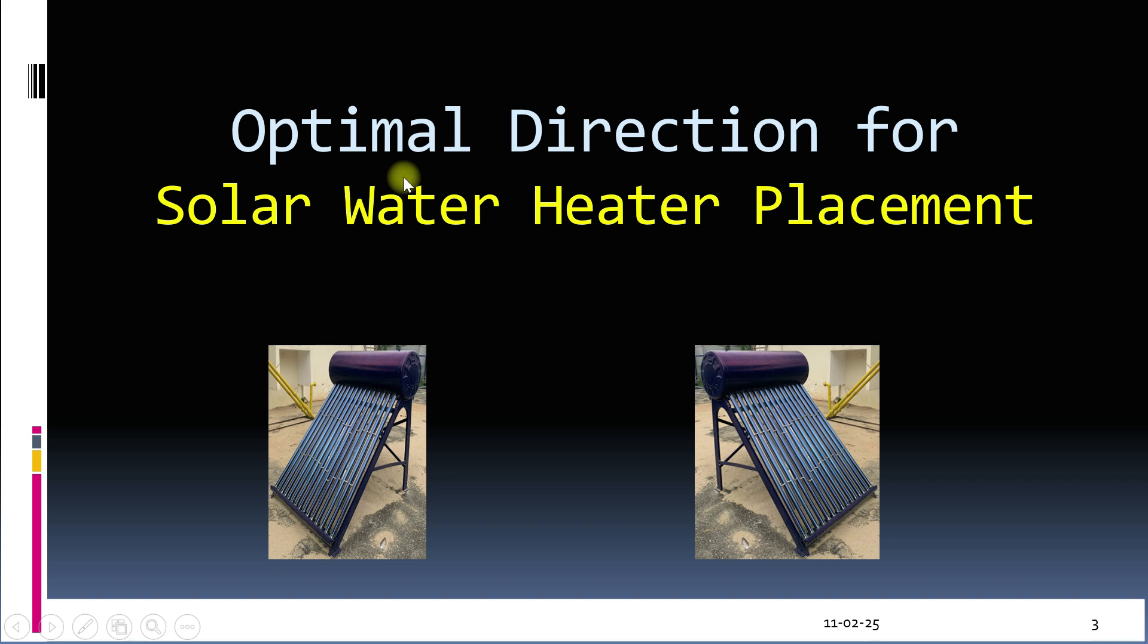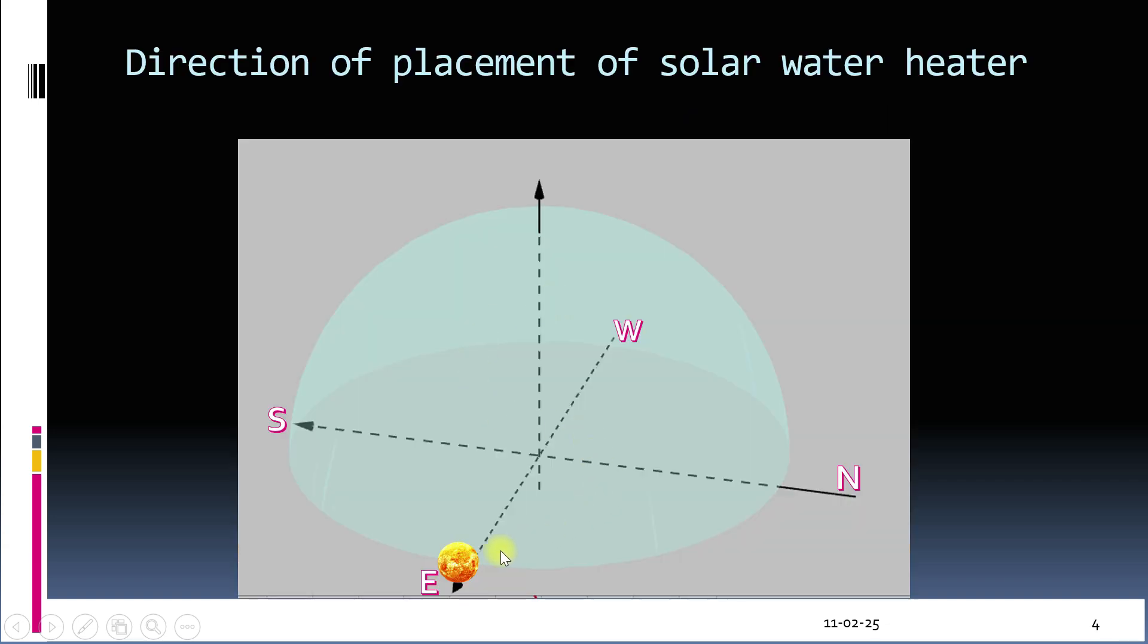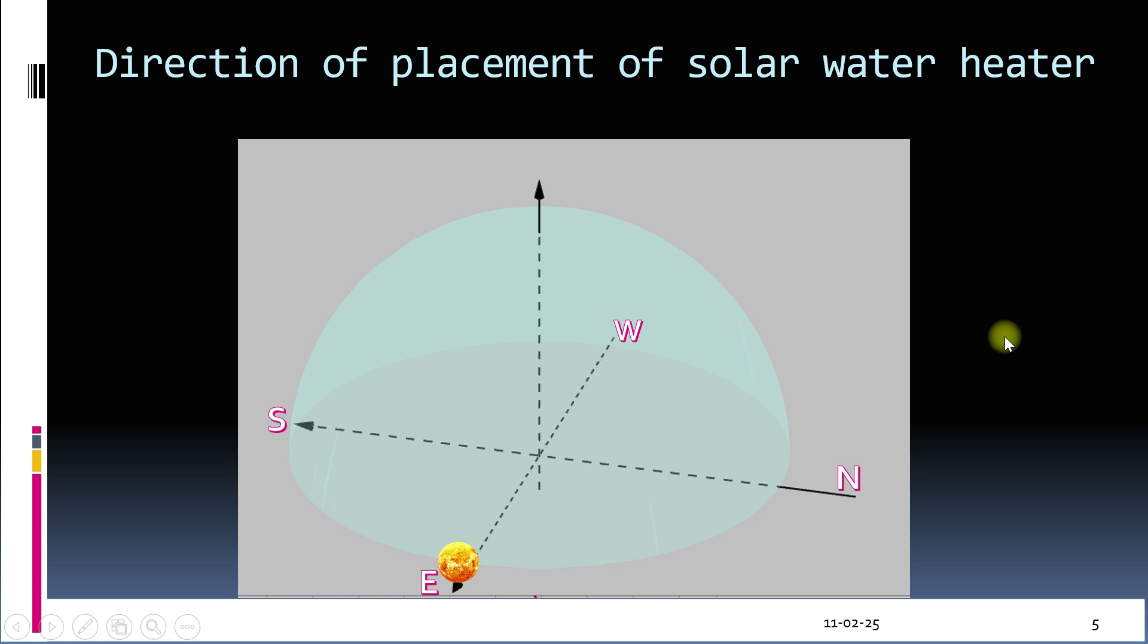To determine the best direction for placing the solar water heater, we first need to understand how the sun moves. In the northern hemisphere, where India is located, the sun moves from east to west through the south. This means the solar water heater should always face south in the northern hemisphere to capture the most sunlight.